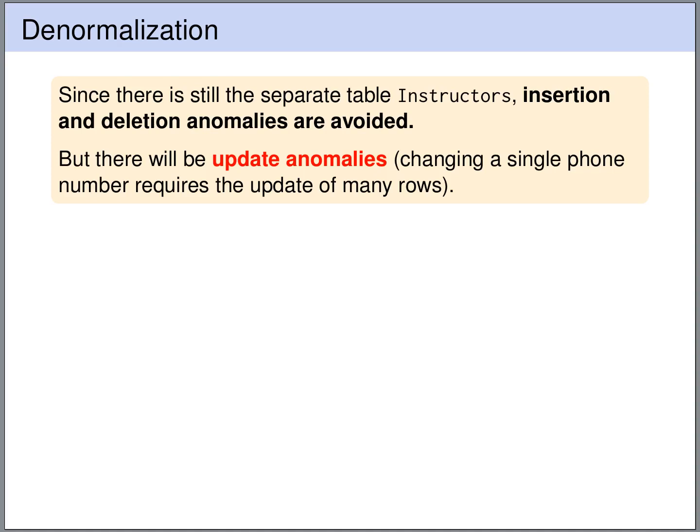However, we will have update anomalies. So if we want to change the phone number of an instructor, then we have to change it in multiple positions — in the instructors table, and multiple times in the courses table for each occurrence of the instructor in the courses table.